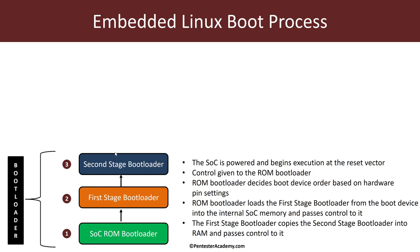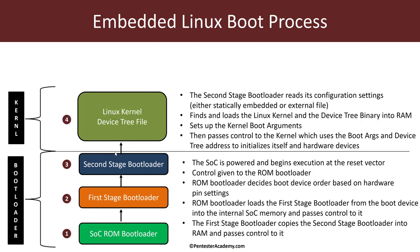Depending on the embedded system, there could be just one stage or multiple stages, depending on the architecture and how many stages are required to load a powerful bootloader like U-Boot. The second stage bootloader's primary responsibility is to load the kernel and the device tree into RAM, look at its own settings — which could be statically embedded or an external configuration file — and then start the kernel, pass it the boot arguments. At that point, the second stage bootloader ceases to exist and the Linux kernel takes over.